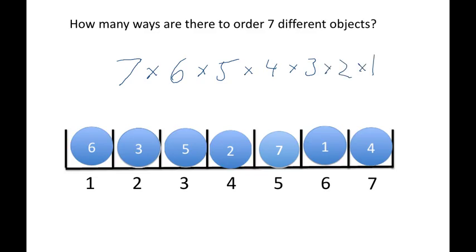So 7 times 6 times 5 times 4 times 3 times 2 times 1. That's the number of possibilities. And it's also written as 7 factorial.